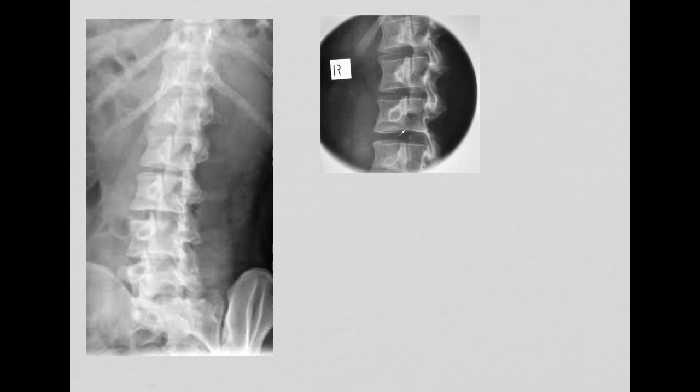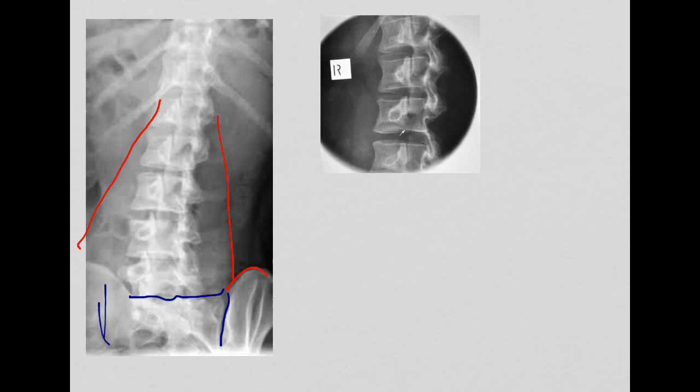Other structures that you might see on an oblique would of course be the shadow of the psoas here and here, our iliac joints, our SI joints — this one's open, this one is closed — the base of the sacrum, and last but not least, our intervertebral disc spaces.